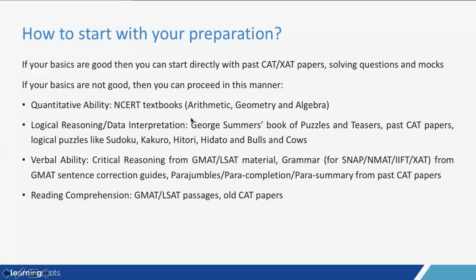When looking at NCERT textbooks, always focus on Arithmetic, Geometry, and Algebra. Arithmetic contributed around 35–40% of the entire CAT paper last year, Algebra was a good 15–20%, and Geometry around 15%. Together those three areas represent roughly 50–60% of your score. Many of those questions were at a fairly basic level, and if you knew how the concepts came into existence you would have been able to solve them completely. NCERT textbooks are a brilliant starting point if you're weak in maths.